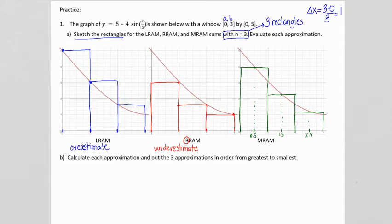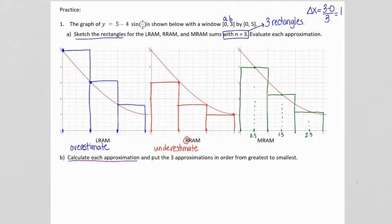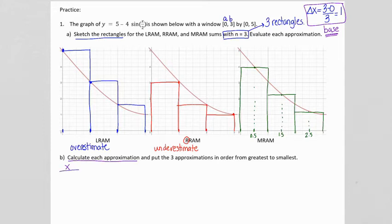Now, how do we calculate these? We need to put the approximations in order from greatest to smallest. We can already tell the order visually: the LRAM is the overestimate, the MRAM is in the middle, and the RRAM is the underestimate. To calculate, we need the base and the height. The base of all rectangles is 1. We need the y values, so we'll make a table of values using the calculator. My x values are 0, 1, 2, and 3.